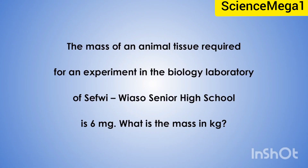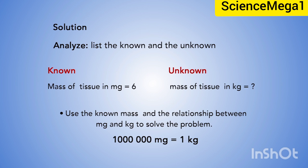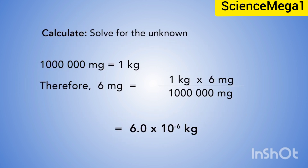Now let's take a second example. The mass of animal tissue required for an experiment in the biology laboratory of Sifuriolso Senior High School is 6 milligrams. What is this equivalent in kilograms? The known is 6 milligrams; we are looking for its equivalent in kilograms. Using the relationship between milligram and kilogram: 1,000,000 milligrams is equal to 1 kilogram. So 6 milligrams multiplied by 1 kilogram divided by 1,000,000 milligrams equals 6.0 × 10⁻⁶ kilograms.